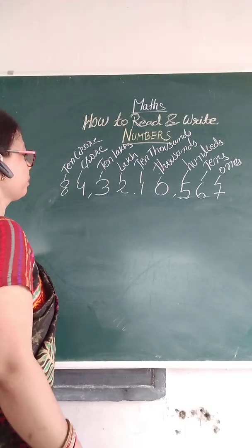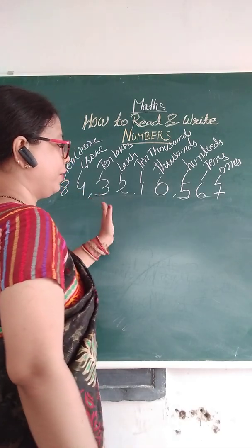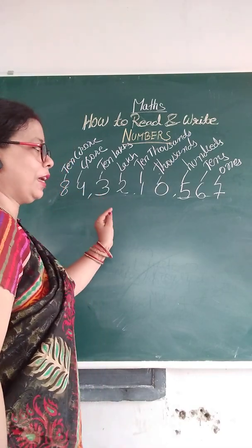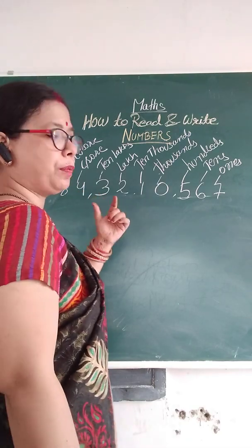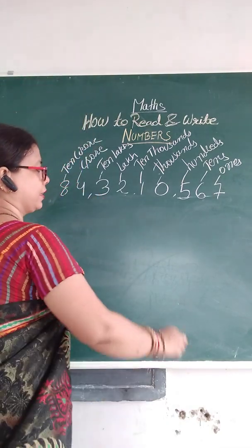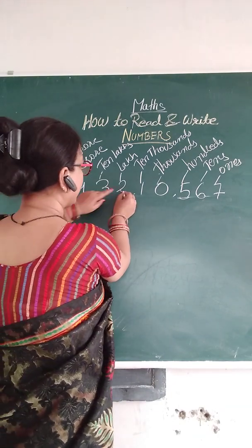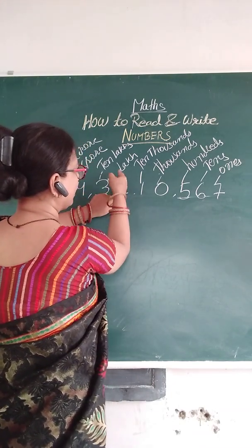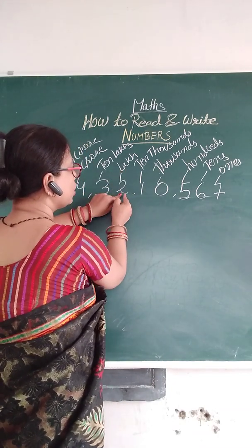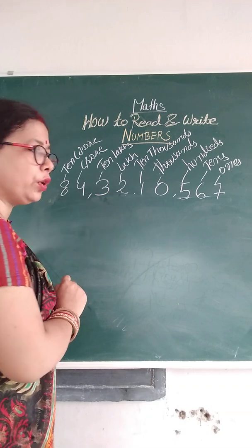Okay, so to recap: place value and face value — face value is as it is, and place value depends on the position. For example, the place value of two would be two multiplied by its place — two lakh.